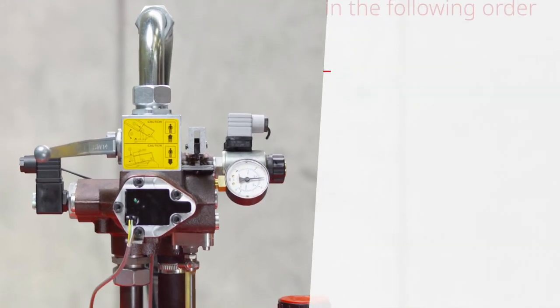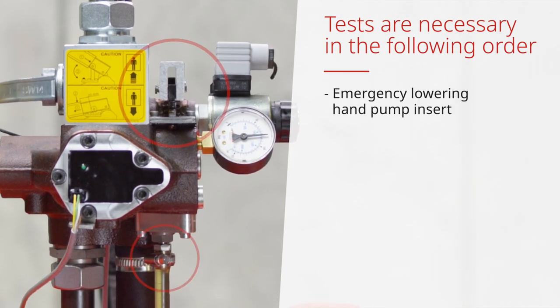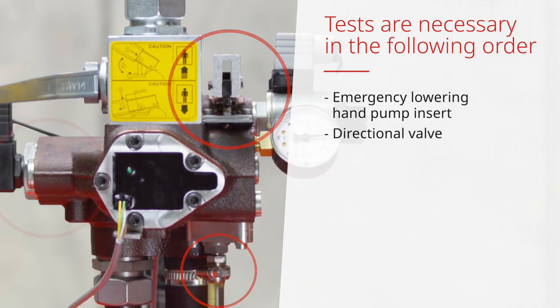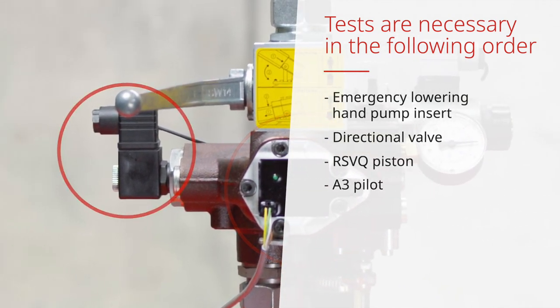To locate the internal leakage, tests are necessary in the following order: emergency lowering, hand pump insert, directional valve, RSVQ piston, A3 pilot.